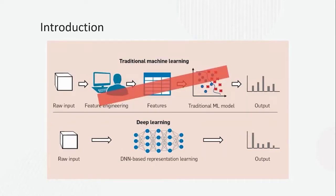This is the comparison between machine learning and the newer deep learning, which removes three steps: feature engineering, feature extraction, and traditional machine learning, replacing them with a DNN based on representation learning. So in deep learning we have three steps: input, DNN or neural networks, then output.